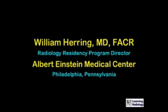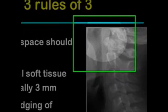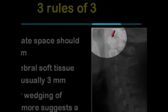Cervical spine trauma — I'm William Herring from Albert Einstein Medical Center in Philadelphia. First we're going to start with some normal anatomy. These are my three rules of three. The predentate space, indicated by the red arrow pointing to the thin lucency just in front of the dens, should be less than three millimeters in an adult.